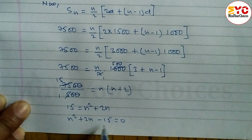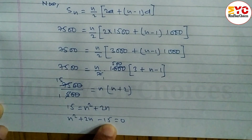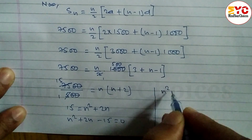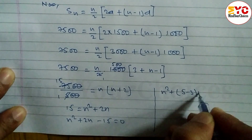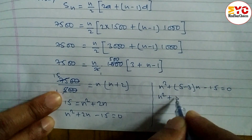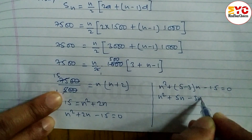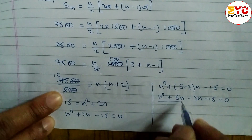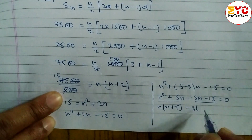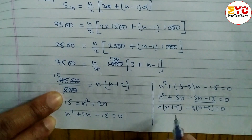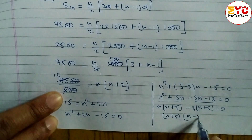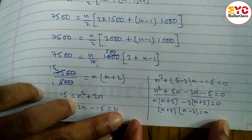Factorizing: n² + 5n − 3n − 15 = 0. Taking n common from the first two terms and −3 common from the last two: n(n + 5) − 3(n + 5) = 0. So (n + 5)(n − 3) = 0.